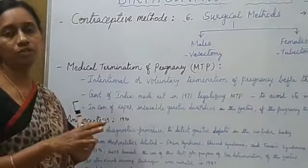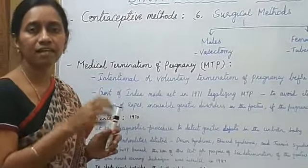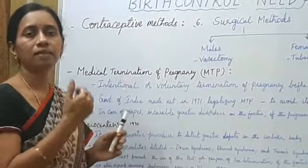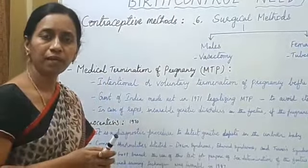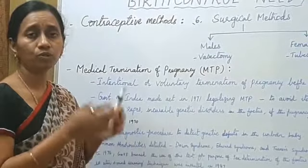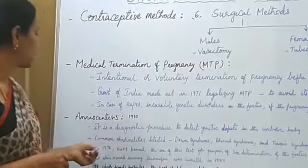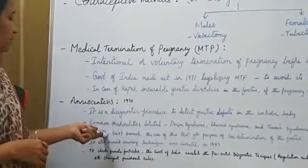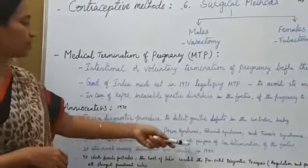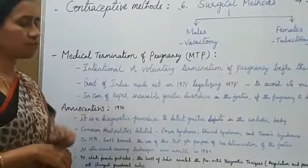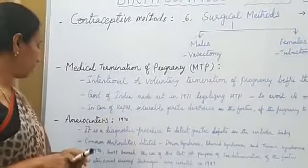This method is also misused — if the fetus is identified as a female, then the persons are going for female feticide. So to check this, the government decided and banned in 1976 the use of this technique for the purpose of sex determination of the fetus.